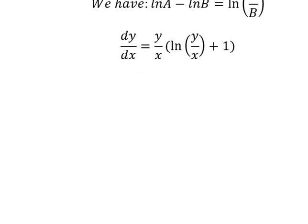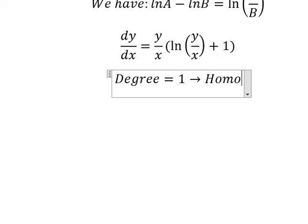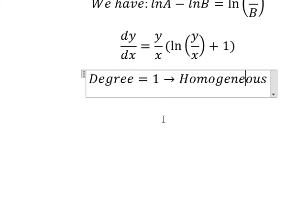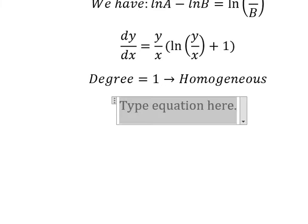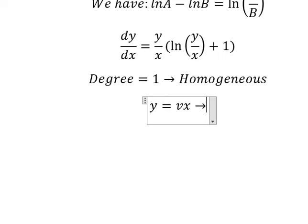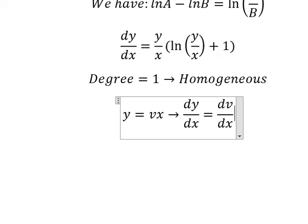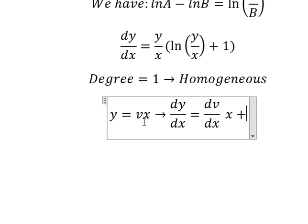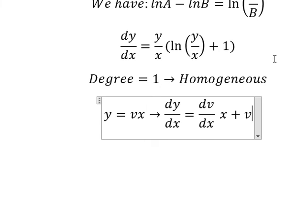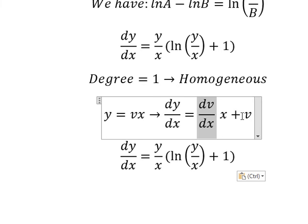Now we see that y divided by x — this is about risk number one, so we can use the homogeneous method. So I can put y equal to vx. If we do the first derivative for both sides, we have dy over dx. We do the first derivative of v, so we have dv over dx multiplied by x, and the first derivative of x gives us number one, so we have v in here.